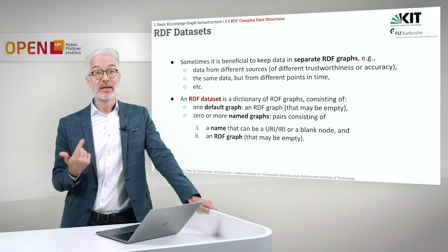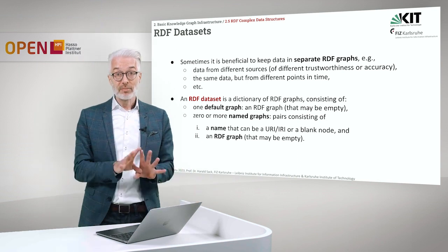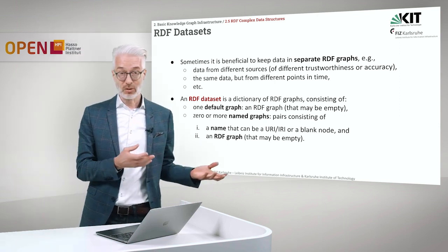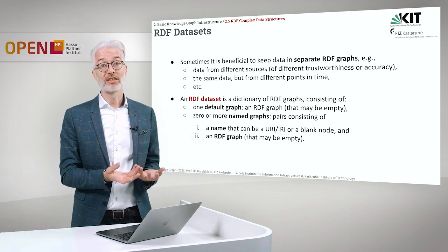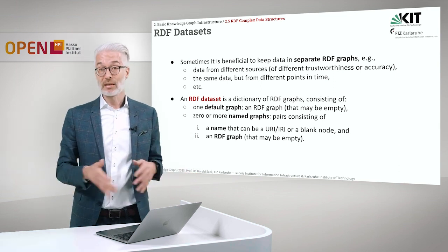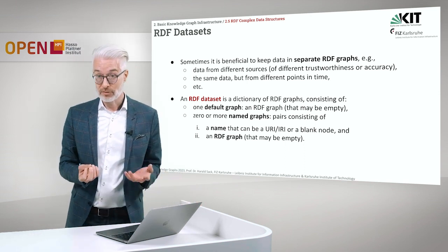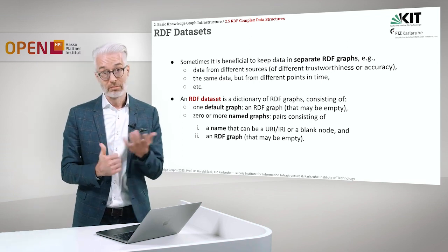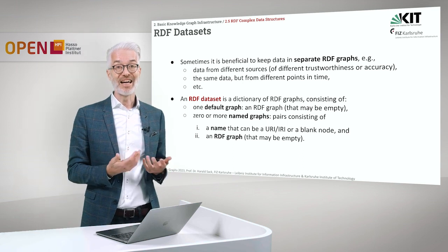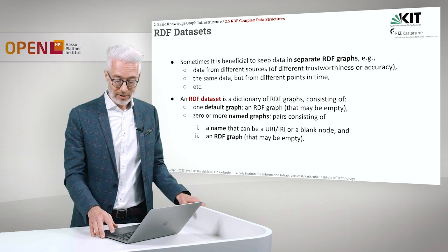We had containers and collections. The last thing to introduce here is so-called RDF datasets. Sometimes it's beneficial to keep data in separate RDF graphs — for example if data comes from different sources with different trustworthiness or accuracy, or if you have the same data from different points in time. For that, RDF datasets have been invented. An RDF dataset is a dictionary of RDF graphs consisting of one default graph — an RDF graph that might also be empty — and then zero or more so-called named graphs, which are pairs consisting of a name (a URI or blank node) and an RDF graph.